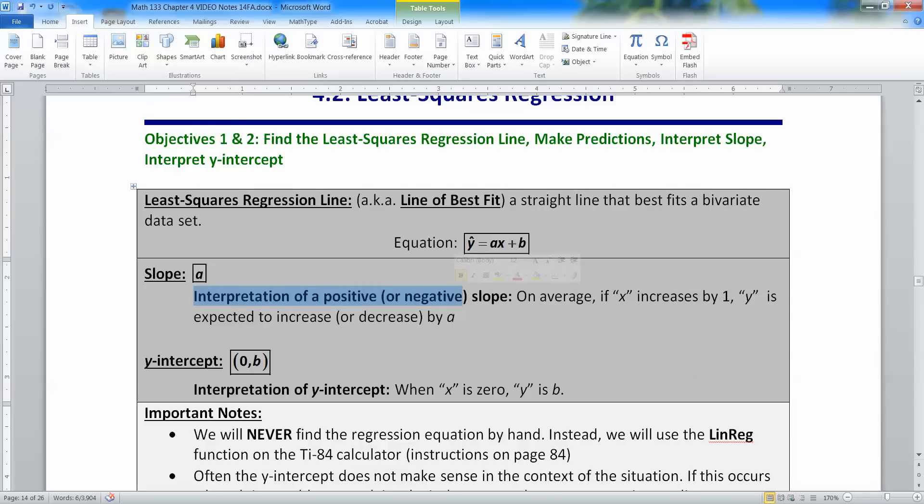All right. So the interpretation of the positive or negative slope would be that on average, if x increases by one, then the y is expected to increase or decrease by a. Now there's a lot going on there. X is in quotes and y is in quotes. And that's because you don't really say x. You say whatever the variable was in English. So if it was free-reduced lunch, you'd say the percent on free-reduced lunch. Or if it's degrees Fahrenheit, you say degrees Fahrenheit. If it increases by one, then we expect the y variable to increase or decrease by a. Now everything in here is on average. It means it's about this. If it increases by one, it's going to go up by about a. Not exactly a, but more or less.